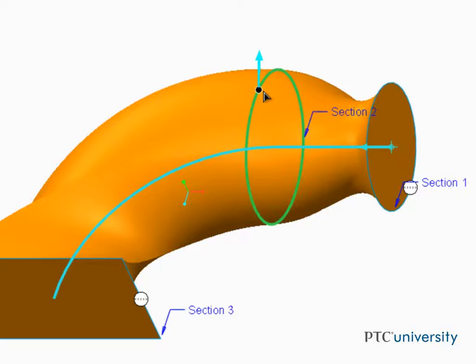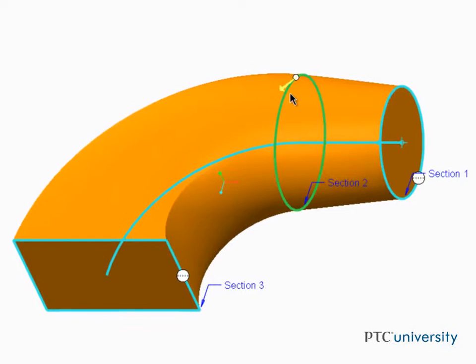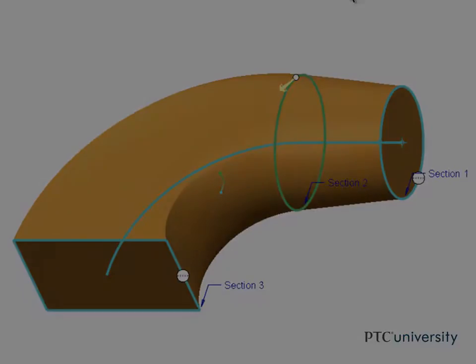Creating and modifying swept blend geometry is an easy and efficient way to create surfaces that follow a trajectory.